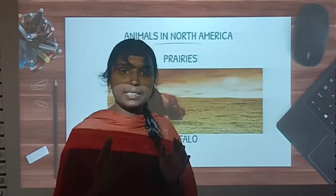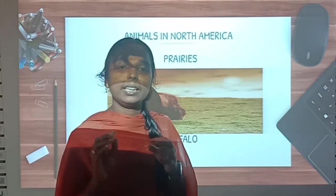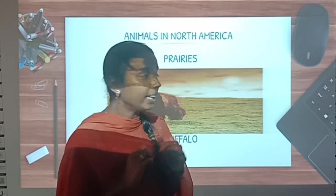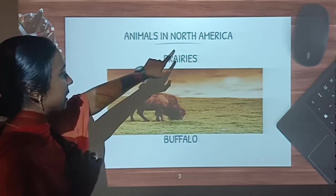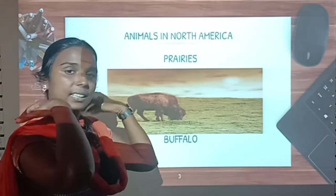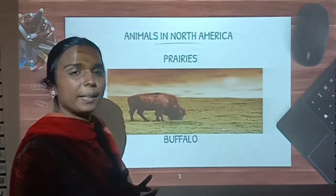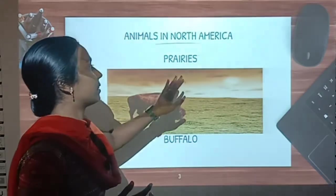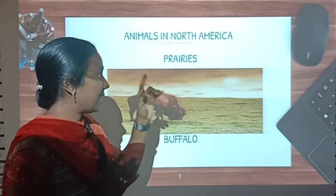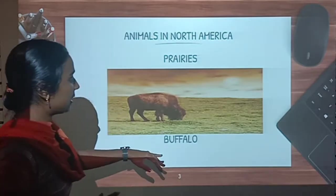The grasslands in different parts of the world have different names. Now we are going to see what animals we can find in different grasslands. First, let us see the animals in North America. The name of the grasslands in North America is prairies. Now we are going to see what animals we can find in the prairies of North America. First — buffalo.